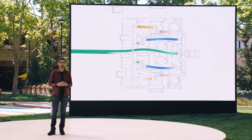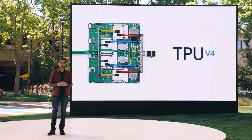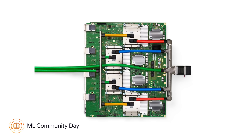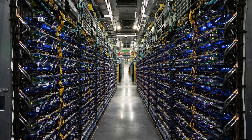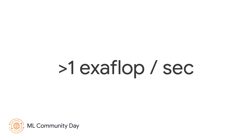Sundar recently announced our latest TPU generation, the TPU v4, at Google I/O. These machines are powered by the v4 chip, which is more than twice as fast as the v3 chips. Like the TPU v3, the TPU v4s are connected together into supercomputers called pods. A single v4 pod contains 4096 v4 chips, and each pod has 10x the interconnect bandwidth per chip at scale compared to any other networking technology. This makes it possible for a TPU v4 pod to deliver more than one exaflop per second of computing power.